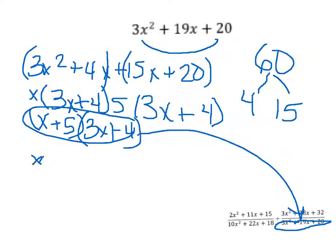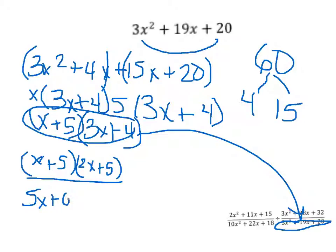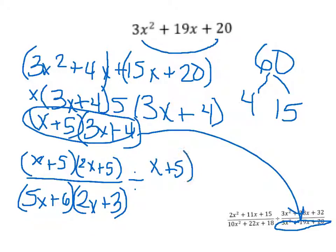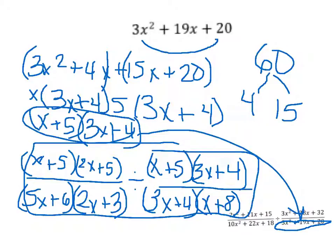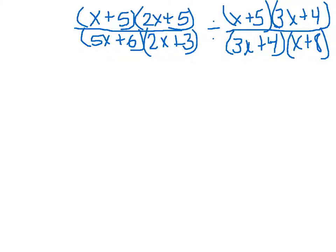So our full problem with everything factored out now looks like: (x + 3)(2x + 5) over (5x + 6)(2x + 3), divided by (3x + 4)(x + 8) over (x + 5)(3x + 4). This is our problem with all four expressions factored.